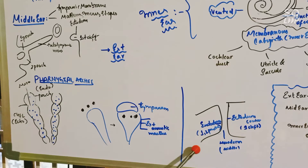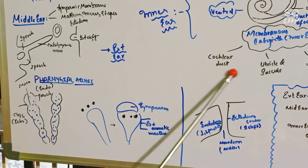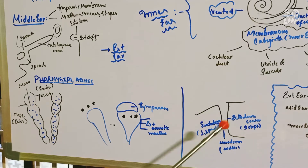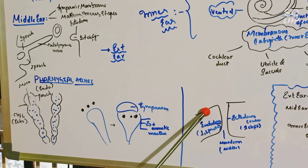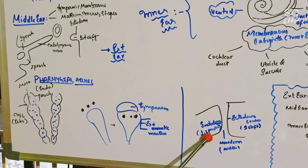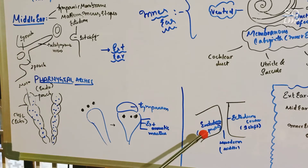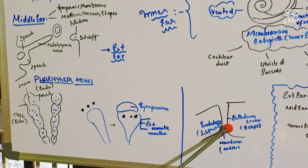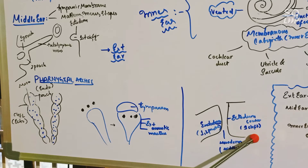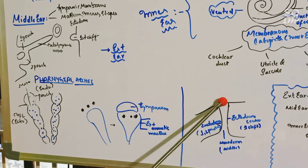Next, let us see about the tympanic membrane. The tympanic membrane is made up of three layers: the endoderm of the middle ear, the ectoderm of the external ear — as the external ear is made up of the first cleft — and the mesoderm in between them. So this is the structure of the tympanic membrane.